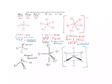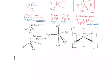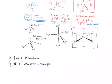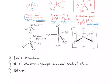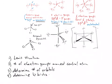Let's review: first, determine the number of electrons and draw the Lewis structure. From that, determine the number of electron groups around the central atom. Third, that tells you how many orbitals you need — four orbitals is sp³, five is sp³d, six is sp³d². After you determine the number of orbitals, determine the hybridization, and then lastly from the hybridization you get the shape.